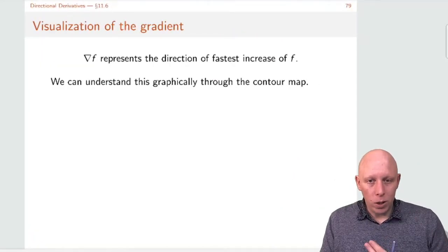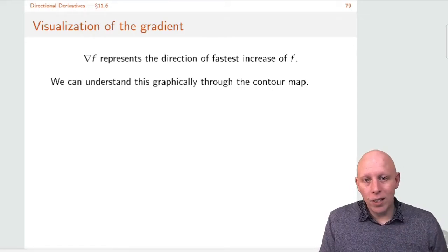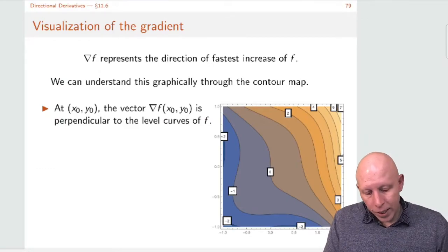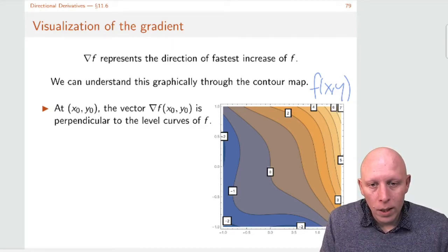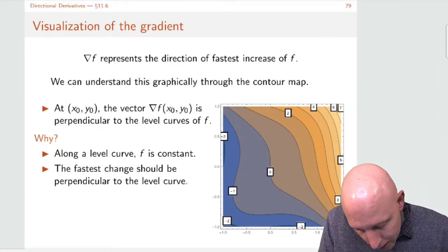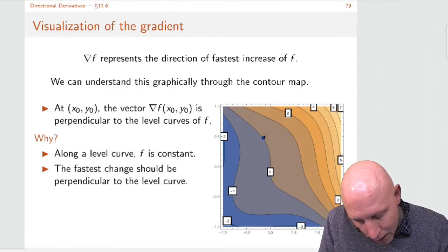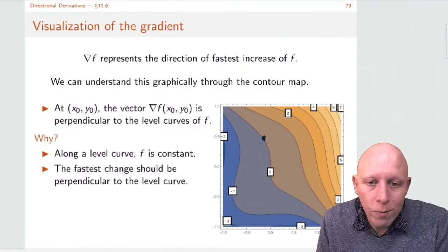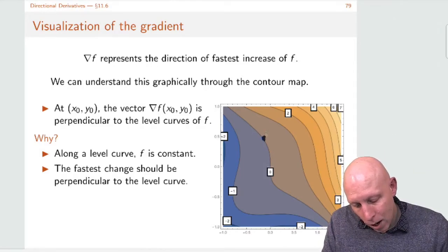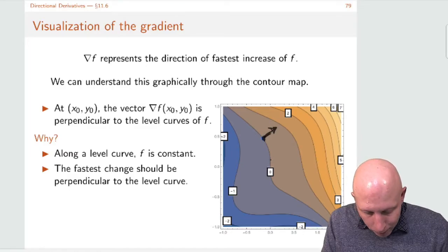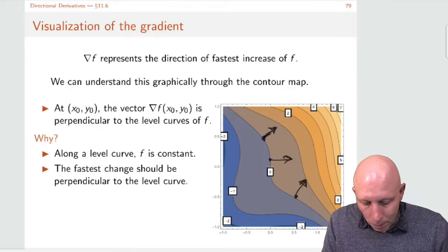So let's look at this visually — we can understand this graphically using the contour map. Here's an example of a function f of x, y and here's its contour map. Let's say we're at a particular point and we want to know what direction does the gradient point. The gradient is always going to point perpendicular to the contour lines. So if I'm here, the gradient points in this direction; if I'm here, it points in this direction; if I'm here, it points in this direction; and so on at each point.